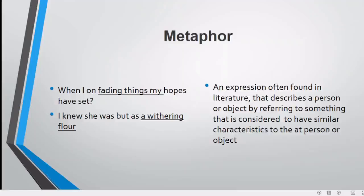Poet has very nicely used metaphor in this poem where she says, 'When I, on fading things, my hopes have set.' Hopes, the dreams of beautiful life, is associated with fading things. The word 'fading things' is metaphorically the dying grandchildren of the poet. 'I knew she was but a withering floor.' Withering means decaying, diminishing, destroying. The grandchild is nothing else but a withering floor, a decaying thing. The word 'decaying floor' is metaphorically used for the grandchild.